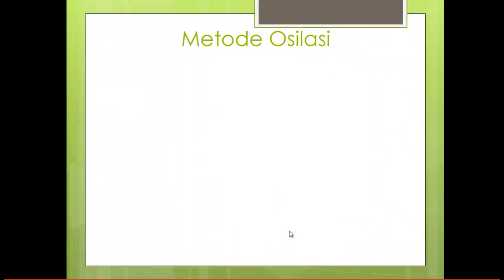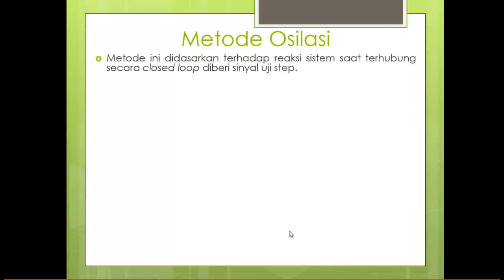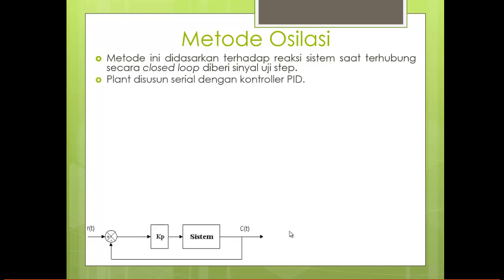Metode yang kedua pada Ziegler-Nichols adalah metode osilasi. Metode ini didasarkan terhadap reaksi sistem saat terhubung secara closed loop kemudian diberi sinyal step. Yang membedakan dengan metode sebelumnya adalah penggunaan closed loop.